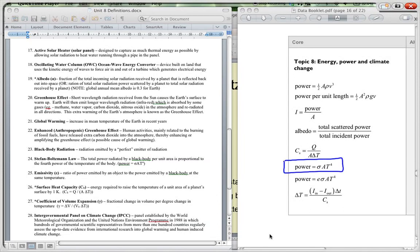This formula over here, power equals sigma A T to the fourth, is Stefan-Boltzmann's law. It basically says that the total power radiated by a black body per unit area is proportional to the fourth power of the temperature of the body. So we've got here that power divided by area is proportional to the fourth power of the temperature.